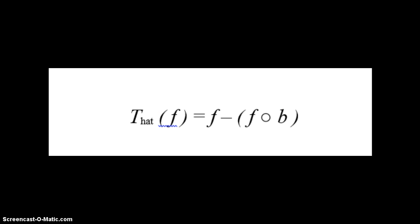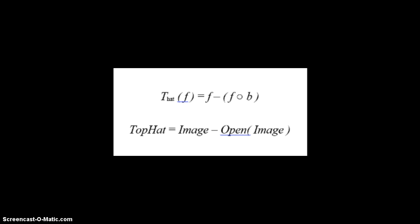The top hat transformation of a grayscale image F is defined as F minus its opening. The F represents the original image and F open-circle B represents the opening of that image. So you are going to subtract the opening from the original — that is how you get the top hat transformation.